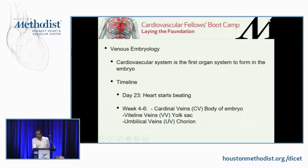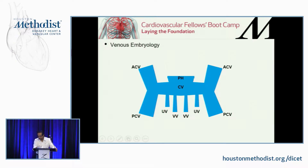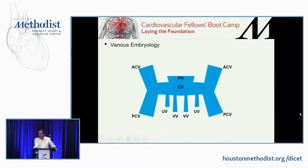Let's start first with where everything comes from — venous embryology. I'm sure everybody remembers how the venous system is formed from med school, but let's do a quick refresher. Everything happens between the four and six-week period for the venous system, and it begins with three pairs of veins: the cardinal veins, the umbilical veins, and the vital veins. And then we have the primordial heart on top.